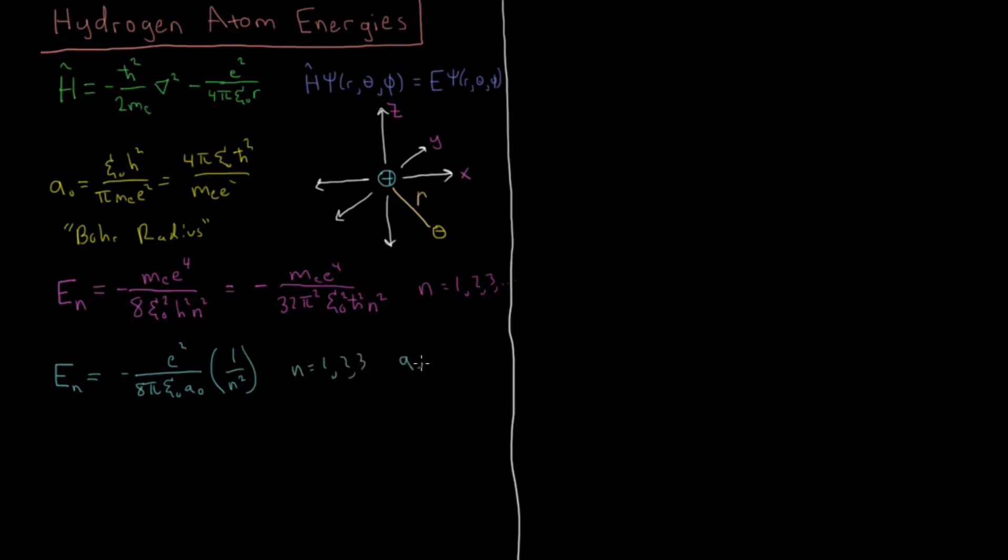And just so we remember, the Bohr radius equals 0.529 angstroms, and 1 angstrom is 10 to the minus tenth meters. So Bohr radius is, in fact, an actual distance, and this is the distance which it is, which you could view as an effective radius of the hydrogen atom, although we'll see later why that's not such a good idea to view it in such simple terms.